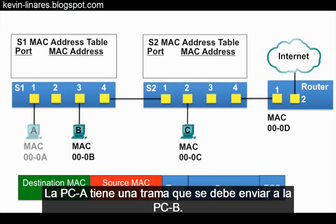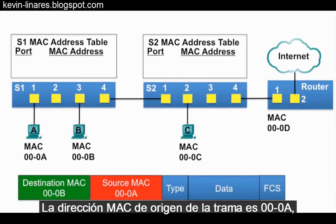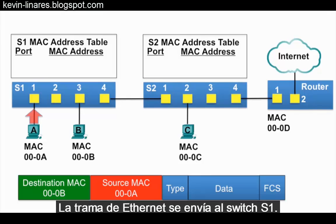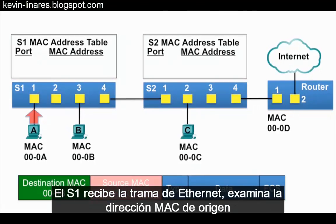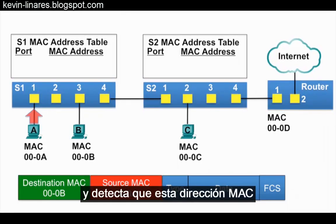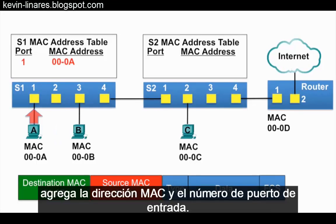PCA has an Ethernet frame to send to PCB. The source MAC address of the frame is 000A and the destination MAC address is 000B. The Ethernet frame is sent to switch S1. S1 receives the Ethernet frame, examines the source MAC address, and notices that this MAC address is not in its MAC address table, so it adds the MAC address and the incoming port number.